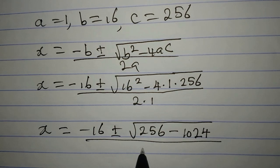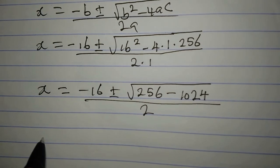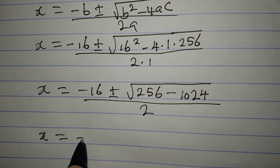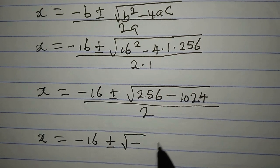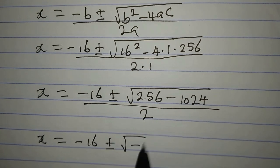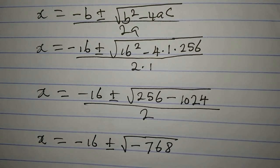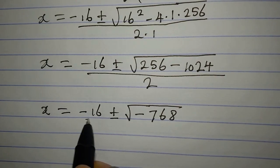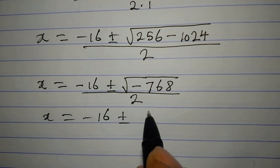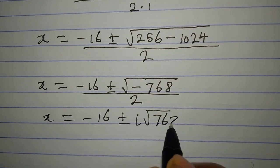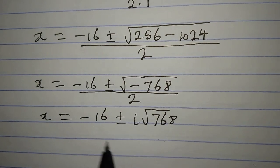Continuing, x equals negative 16 plus or minus the square root of negative 768, divided by 2. Since we have a negative under the square root, we get a complex number: x equals negative 16 plus or minus i times the square root of 768, all over 2.